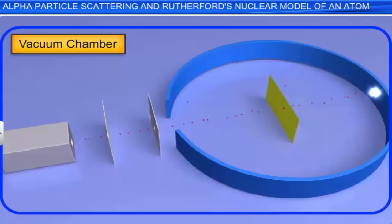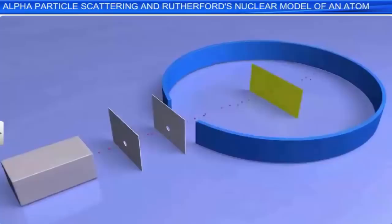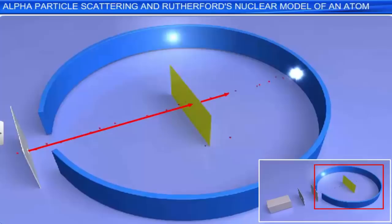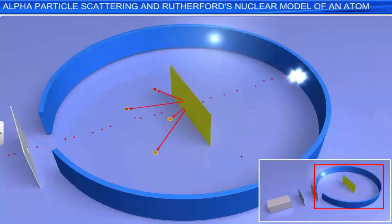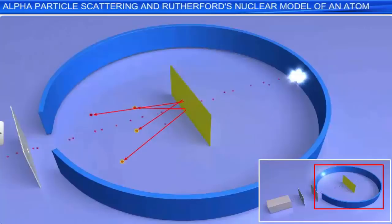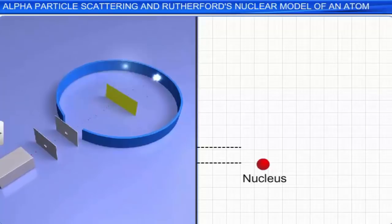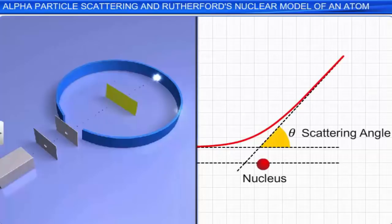It was observed experimentally that most of the particles passed straight through the gold foil without any deviation in their path. A few of them suffered minor deviations, and a very few suffered large deviations. These deviated particles were studied as a function of the angle of scattering. The angle of scattering is defined as the angle between the path of the incident particle on the gold foil and the path of the scattered particle away from the gold foil. A graph was plotted between the number of scattered particles detected on the y-axis and the scattering angle on the x-axis.